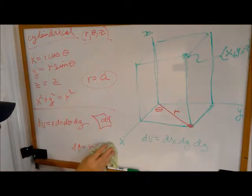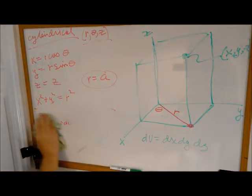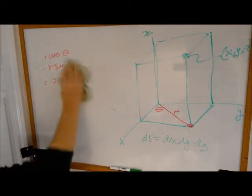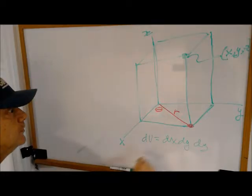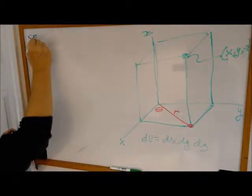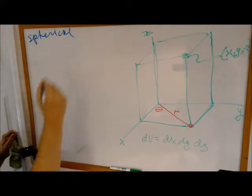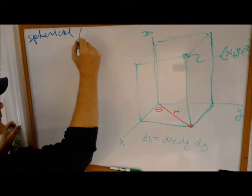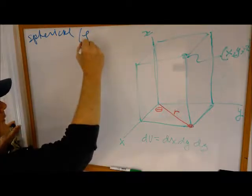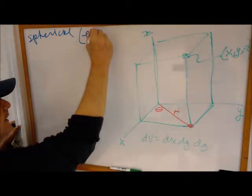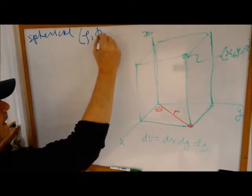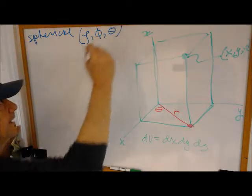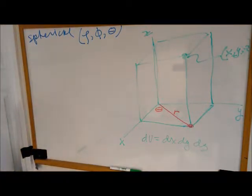Now we're going to do spherical coordinate system next. We'll do that in blue. Spherical. Here we're going to use rho, which I'll explain shortly, phi, an angle phi, and θ. That's the same θ as the polar coordinate system. How does it work?